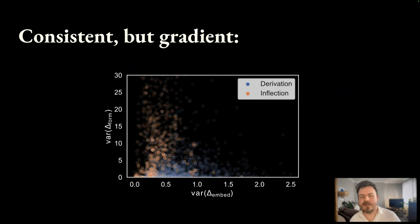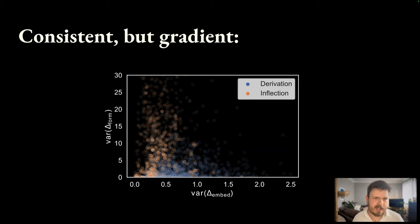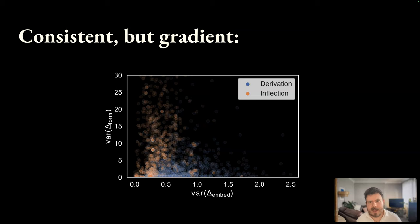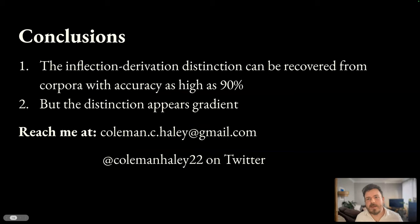However, while we find a high degree of consistency in how the terms inflection and derivation are used with respect to these measures, we do not find natural classes in terms of these measures. Here we see our two most predictive features — using these alone, we'd be able to get 84% accuracy on Unimorph in terms of classifying whether a construction is derivation or inflection. However, there aren't really natural clusters in this data. If you took away the labels, it would look roughly continuous. So the application of these terms is consistent in terms of these measures, but gradient. The inflection-derivation distinction can be recovered from corpora with accuracy as high as 90%, but the distinction appears gradient.